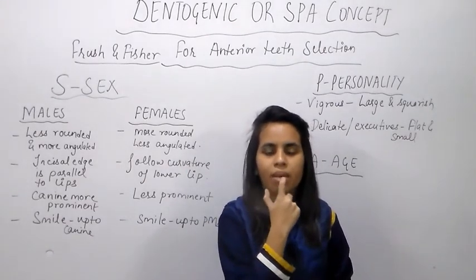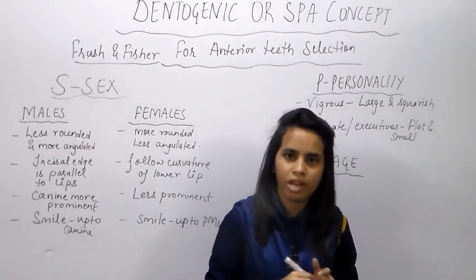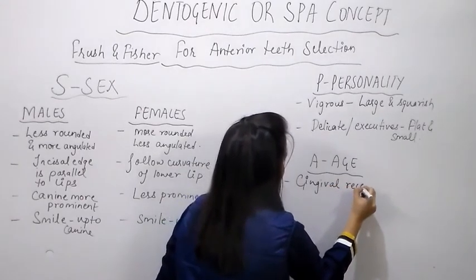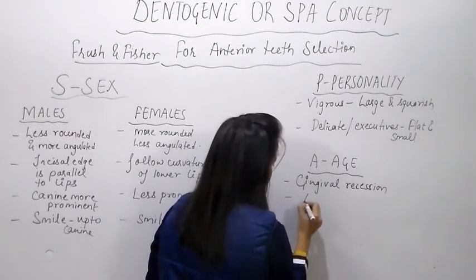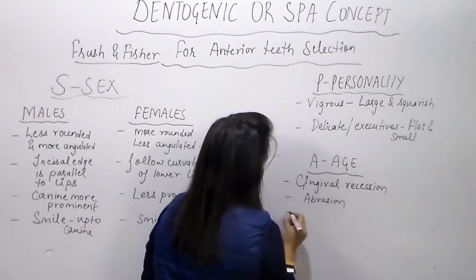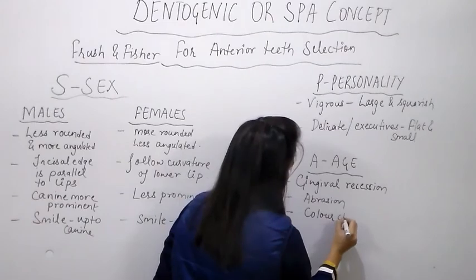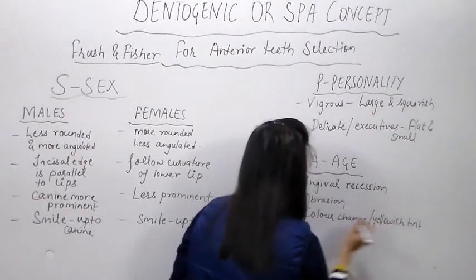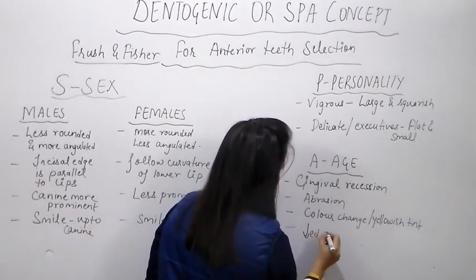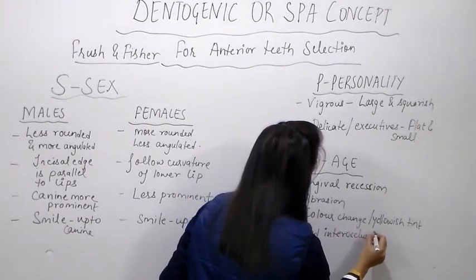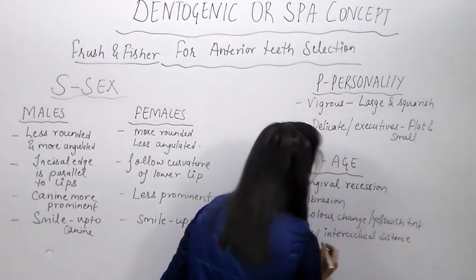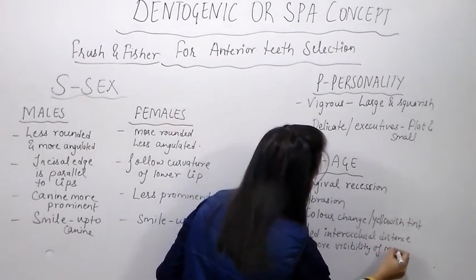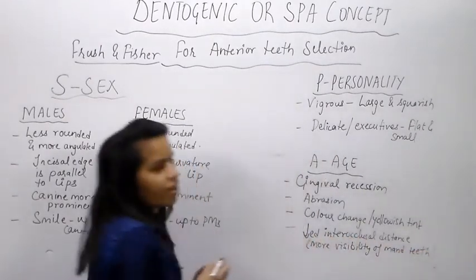Also, the inter-occlusal distance decreases due to abrasion, and due to decreased inter-occlusal distance, mandibular teeth are more visible compared to a young patient. So the age-related changes to keep in mind are: gingival recession, abrasion/abradation, color change (yellowish tint), and decreased inter-occlusal distance with more visibility of mandibular teeth.